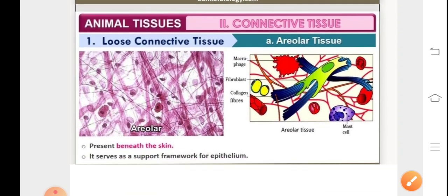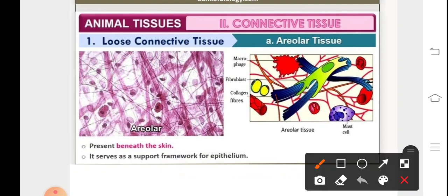Firstly, the areolar loose connective tissue. It is present beneath the skin. We can see through the diagrammatic representation that these cells, that is the macrophages, the mast cells which carry out phagocytosis, have been marked.